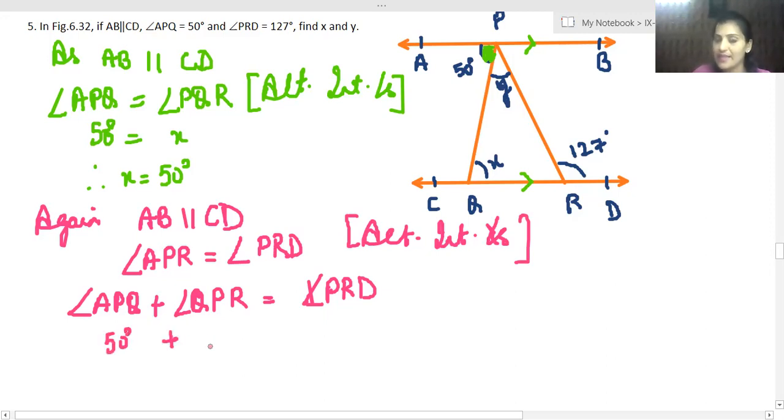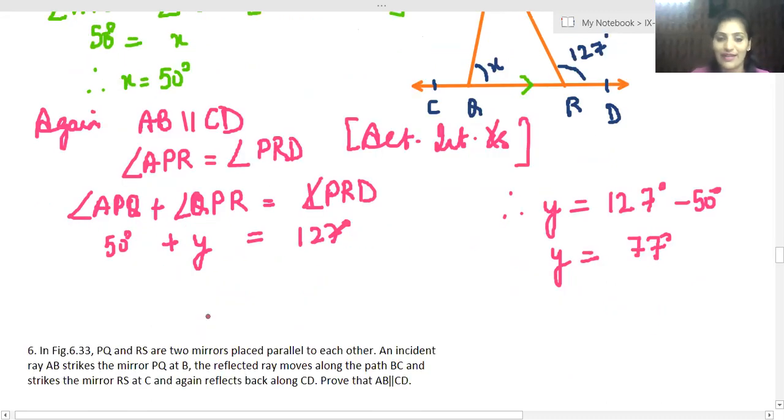This is angle Y, and PRD is given to be 127 degrees. Okay, so therefore Y will be 127 degrees minus 50 degrees. So bata, Y ki value kya aayegi? Bata ji. 77. Okay, so I think we